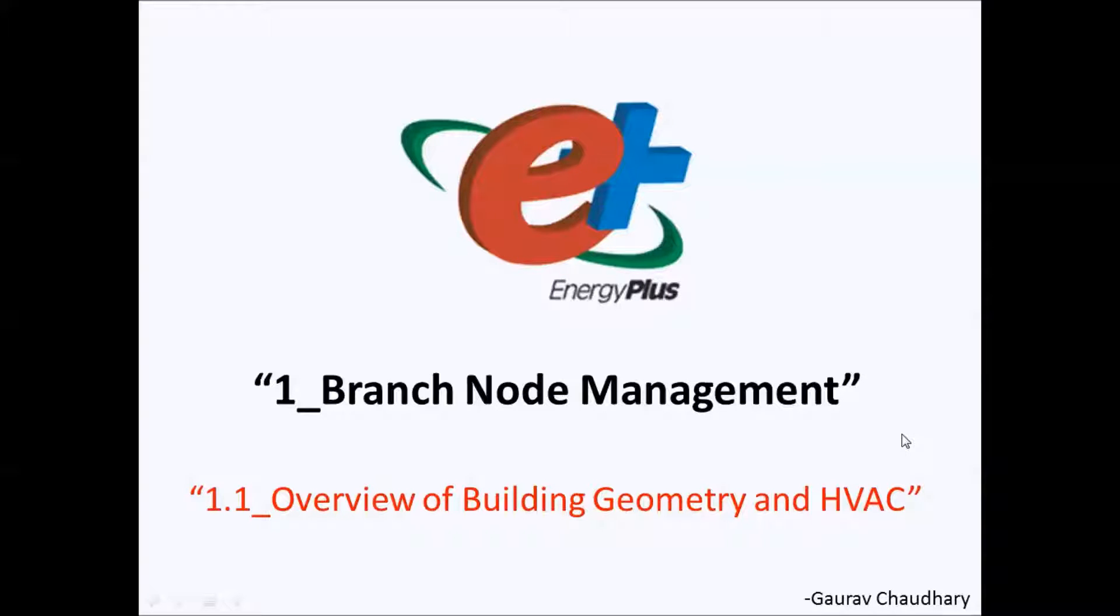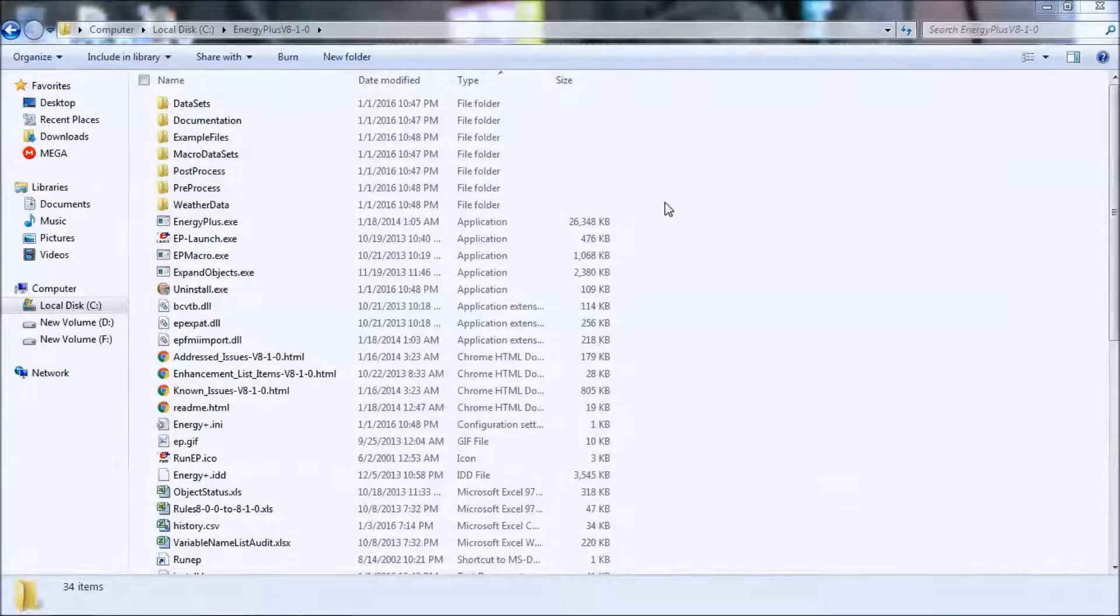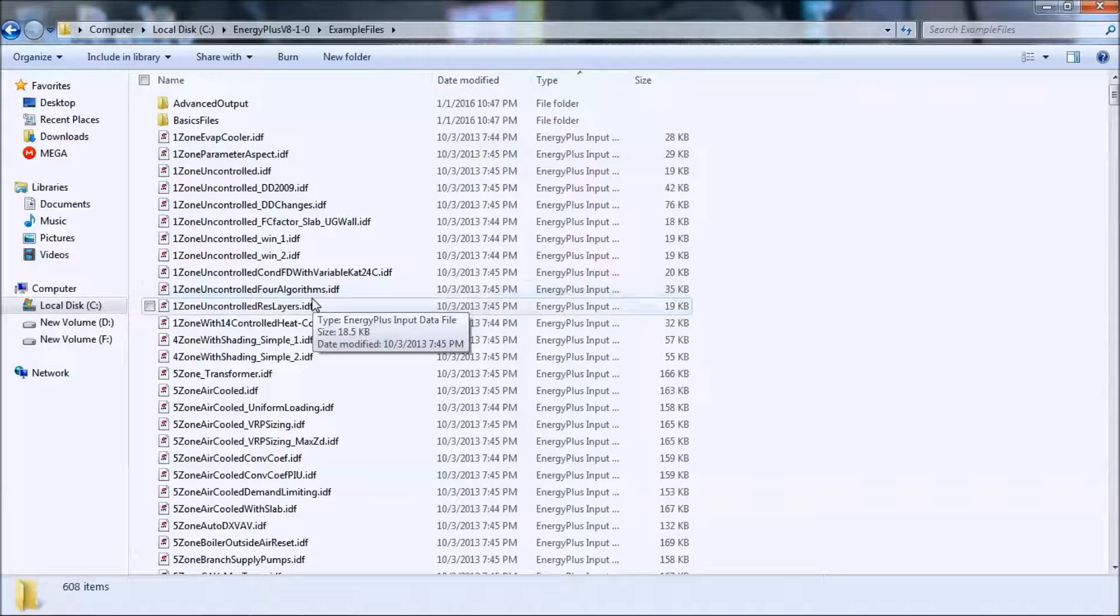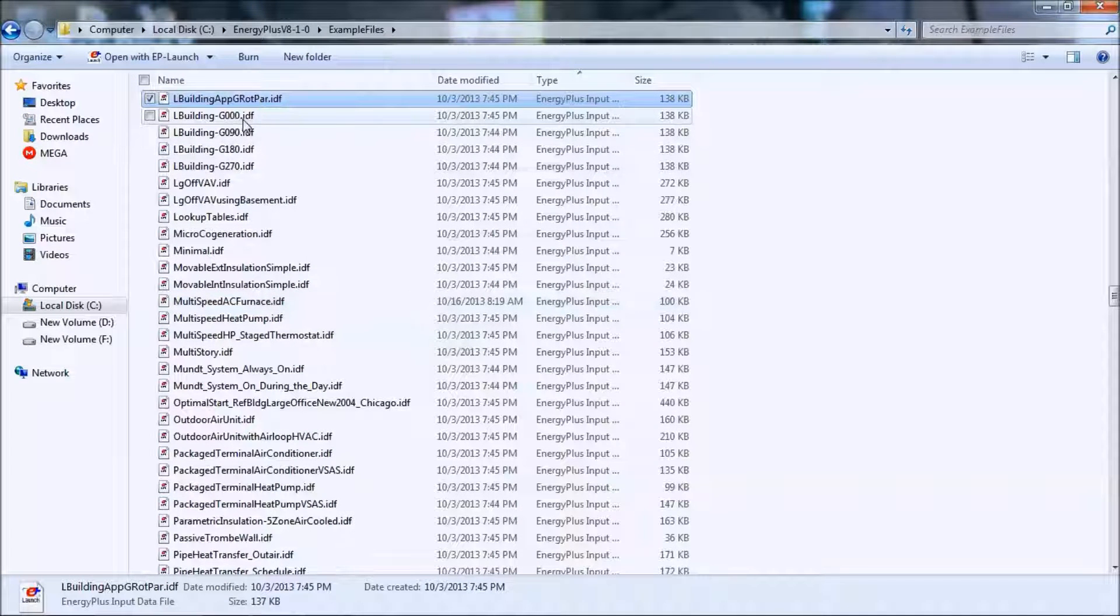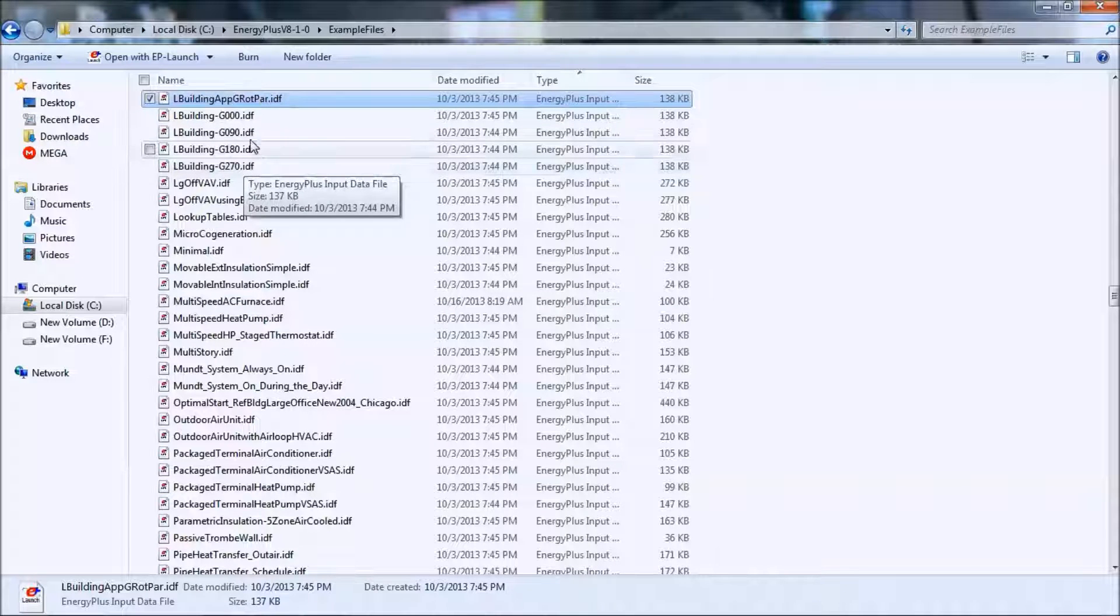I will start with an IDF file which already has all the objects other than HVAC of the building. The building form, materials, construction, site, design days, schedules - these are already present in the building. I actually prepared this IDF file using a file named L_Building_G_00091_8270. I actually used this file.